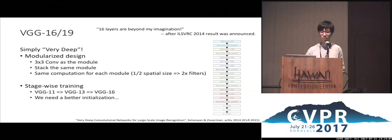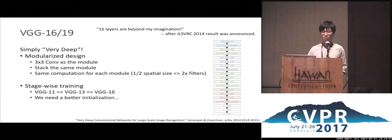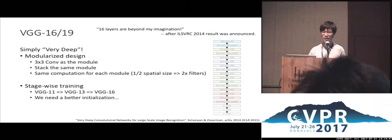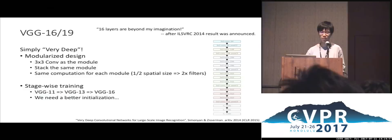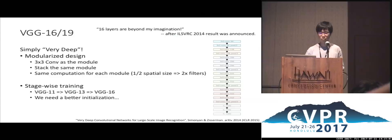When we go deeper, we don't need to design new layers — we can use the same template. When VGGNet was first published, it was trained using stage-wise training, starting from 11 layers and gradually increasing to 13 and 16. This type of stage-wise training is not practical because it is time-consuming and not end-to-end. However, VGGNetwork can be trained from scratch if we have better initializations.